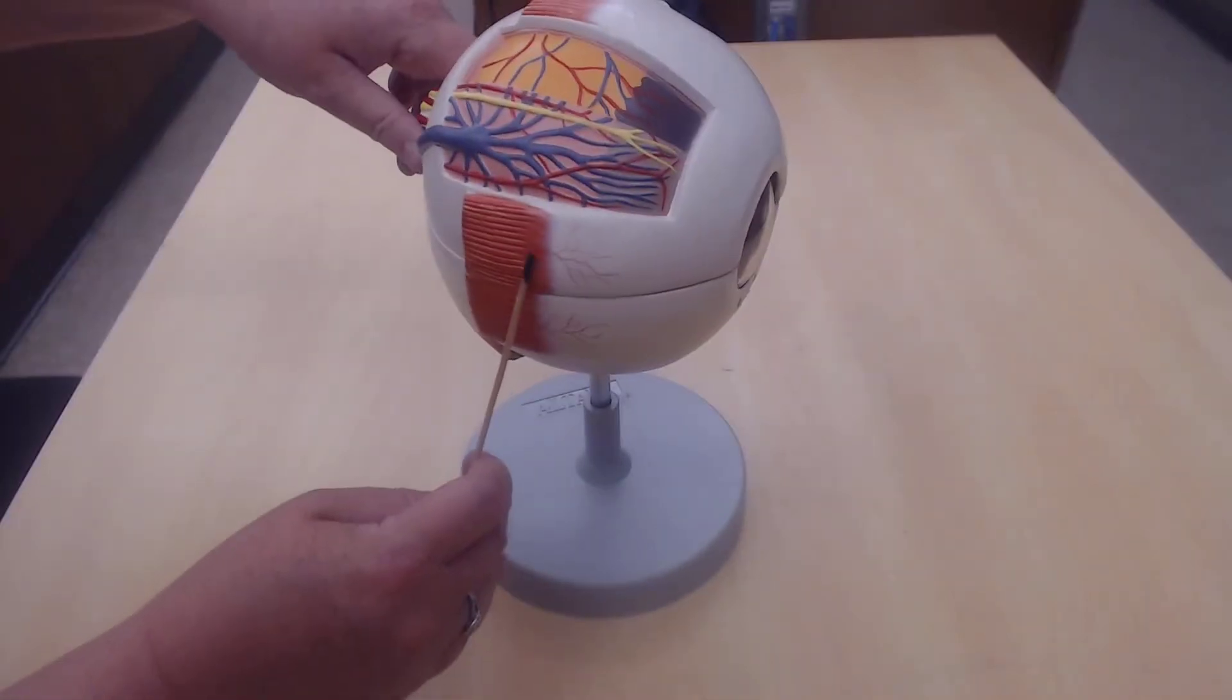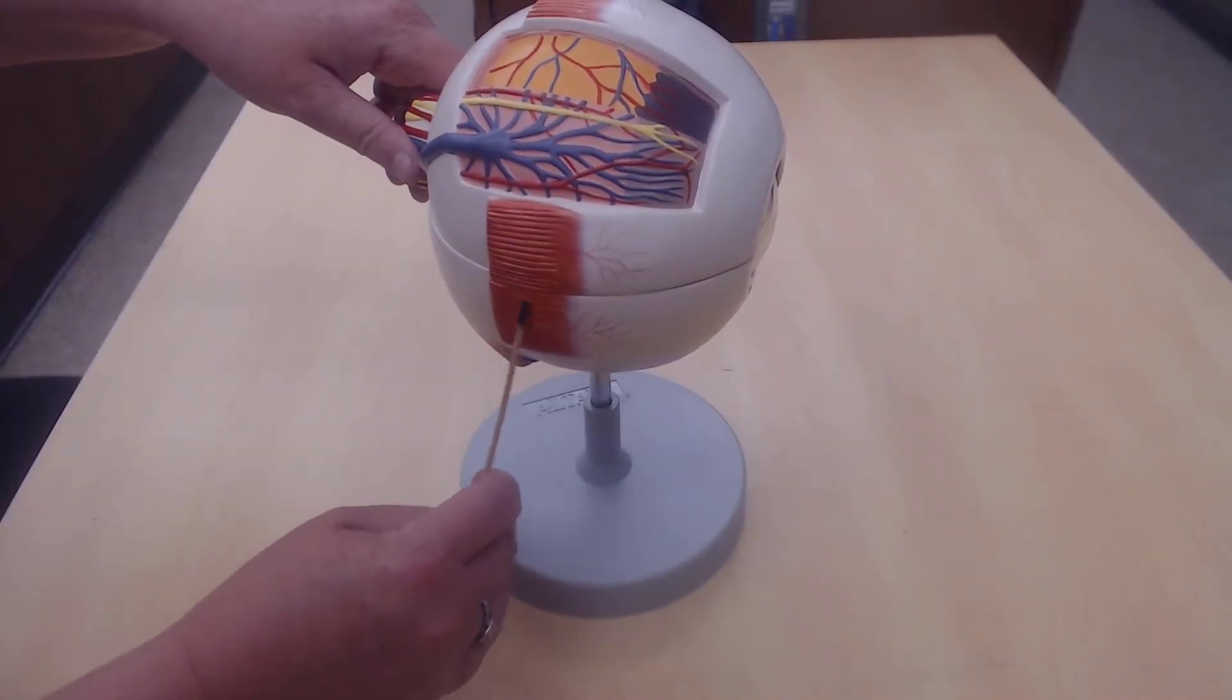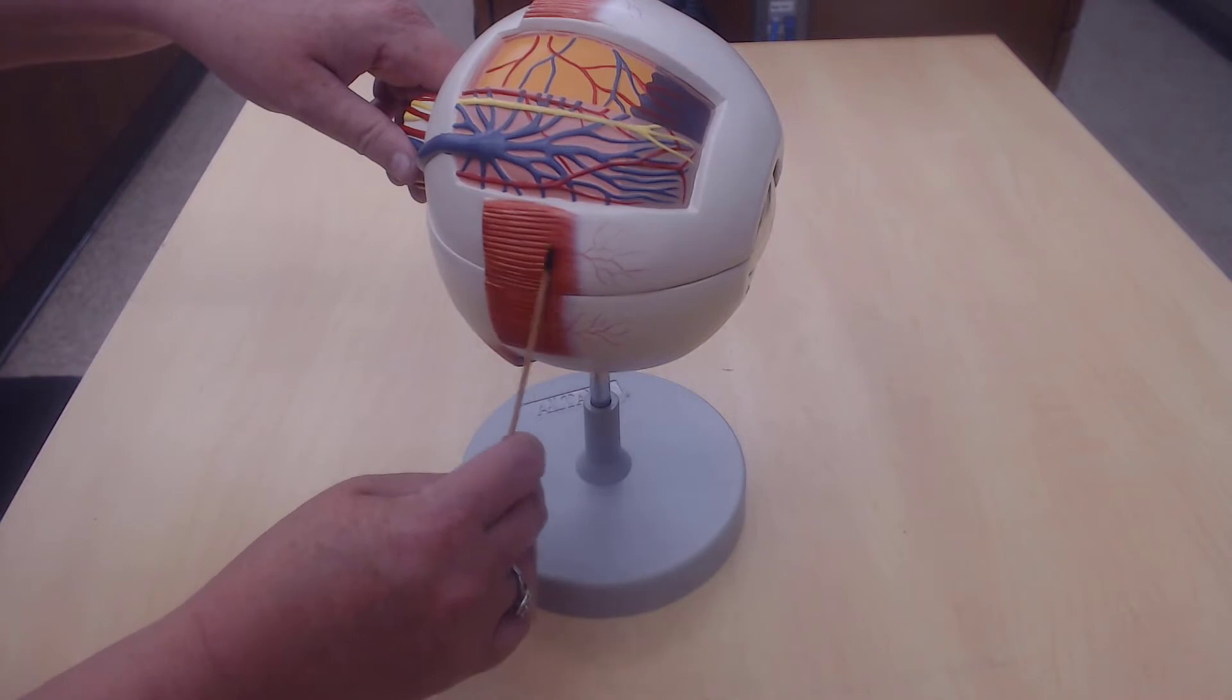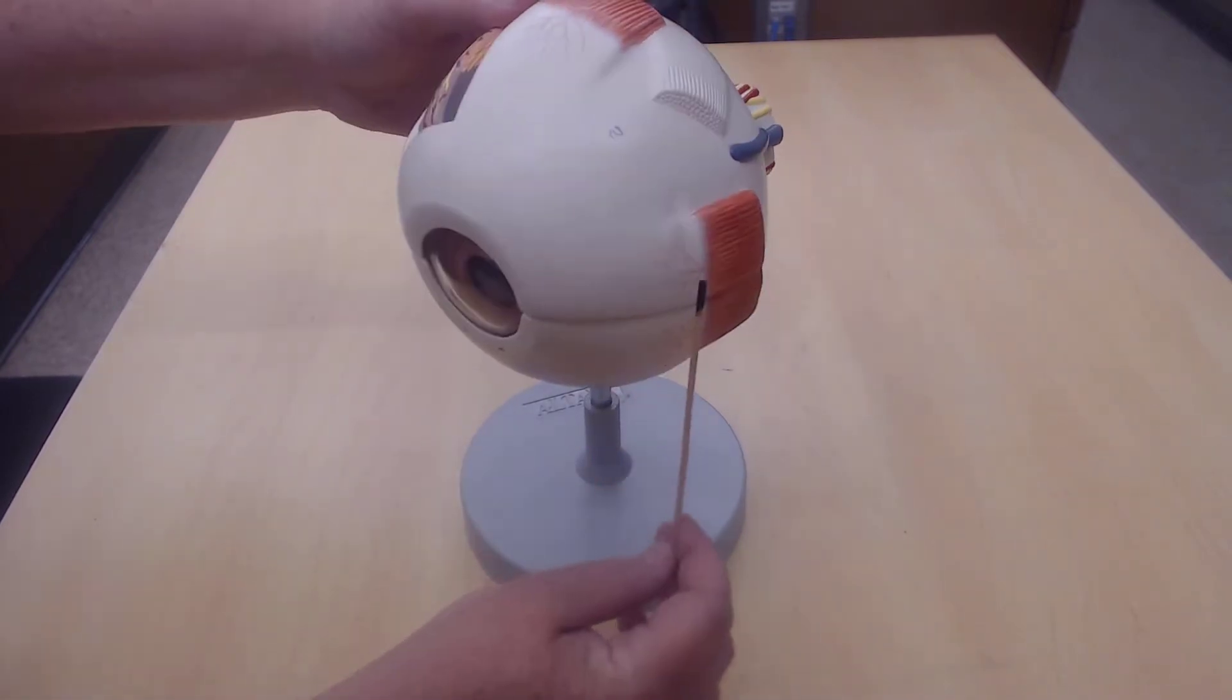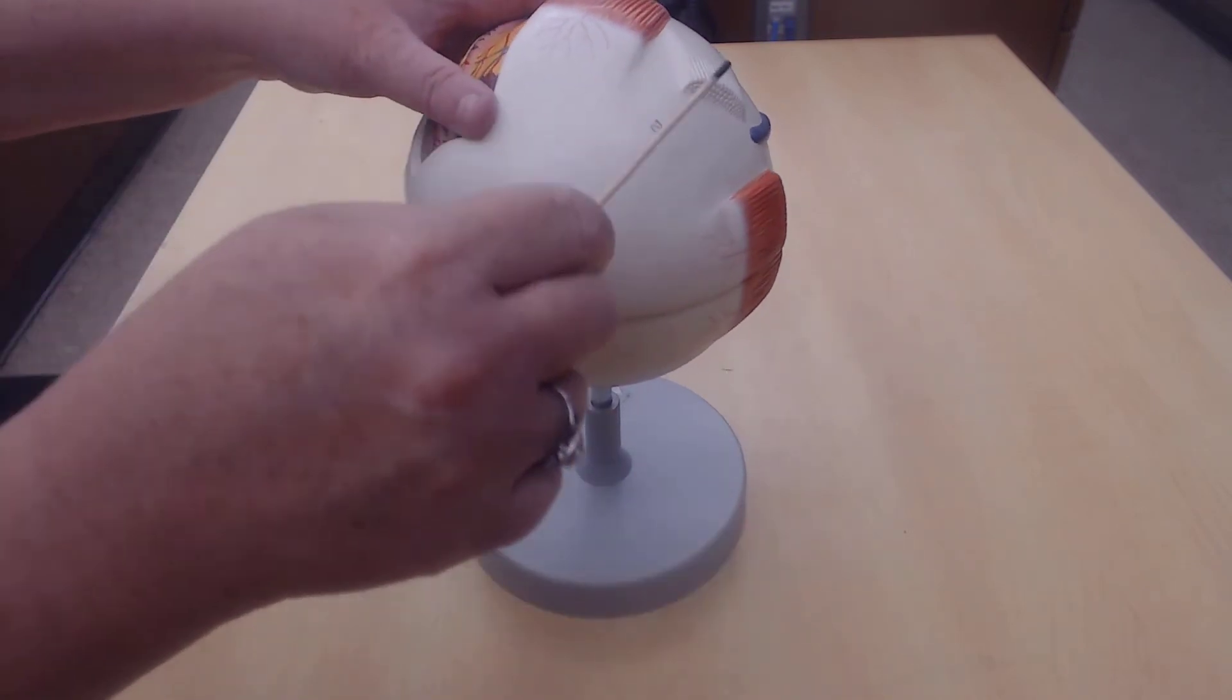So this is the lateral rectus muscle. And medial rectus muscle, see this little thing up here.